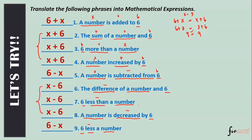To recap: when you see 'a number is added to,' 'six more than,' or 'six less than,' the order is reversed. 'Subtracted from' is also reversed. But 'six less' is taken as-is. For subtraction, you must be careful about position — six minus three equals three, but three minus six equals negative three, so they are not equal. For addition, flipping is fine.